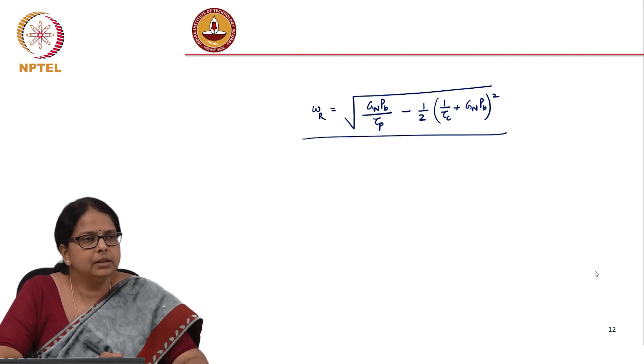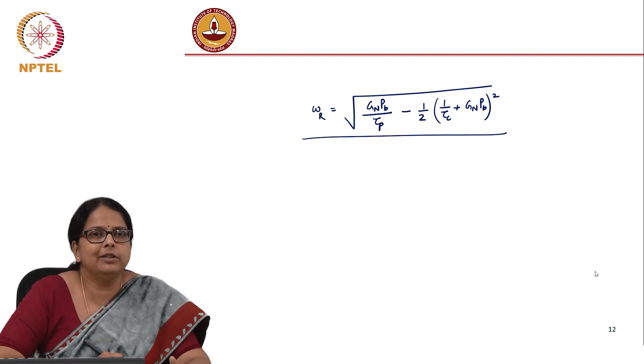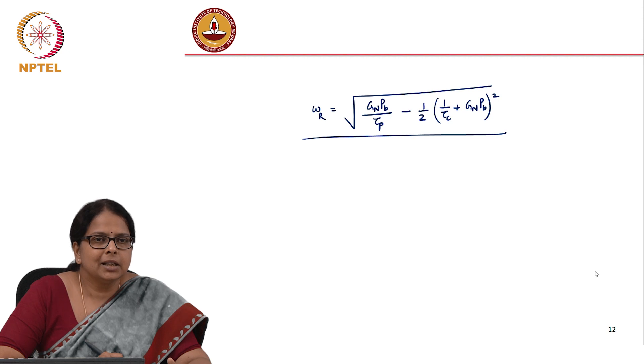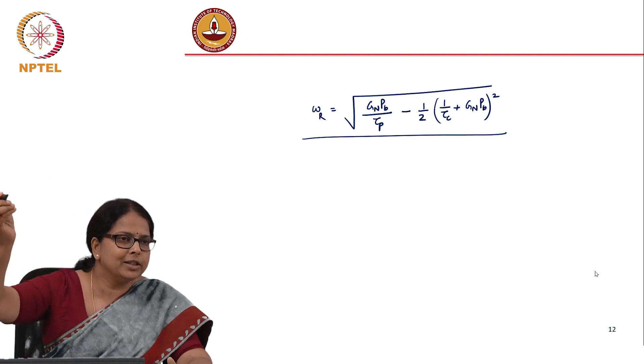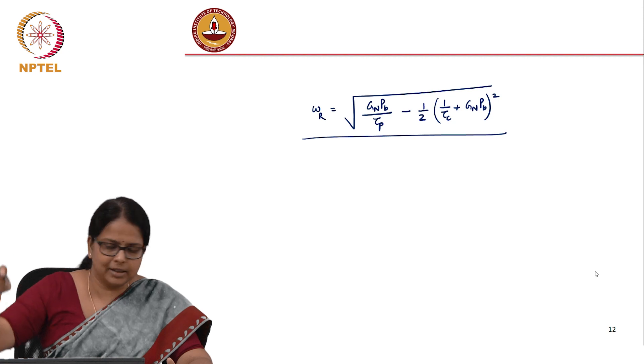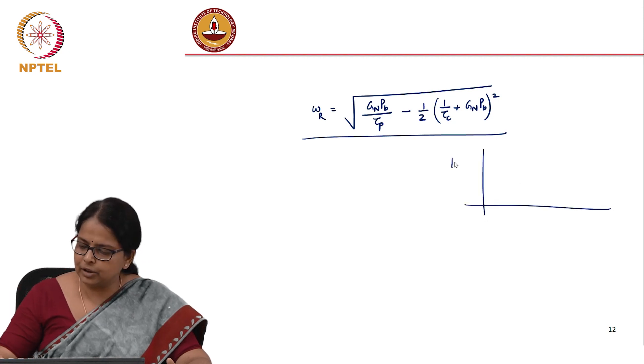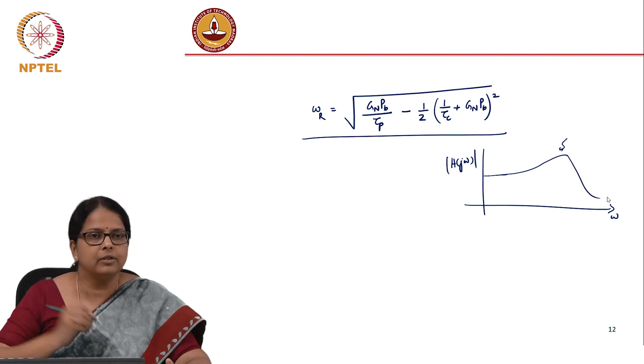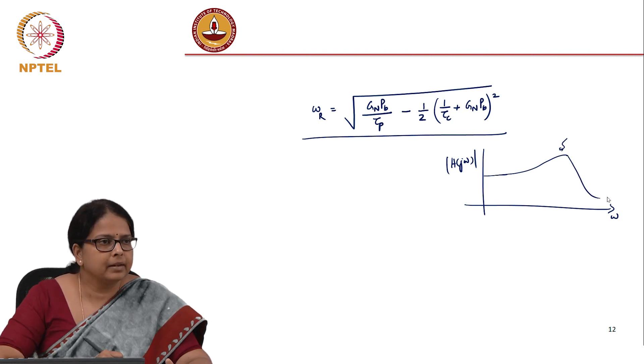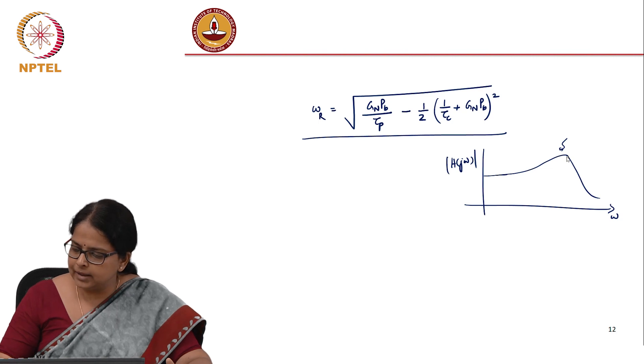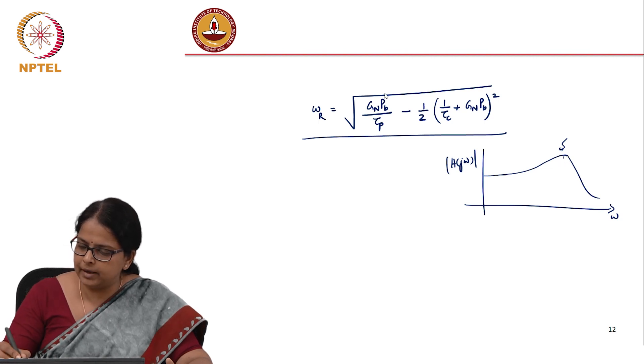What does this mean? The system has a resonant frequency, meaning it has certain maximum response at that frequency. If you plot h(j*omega), there will be some response at lower frequency, there is a frequency at which it is maximum and then it falls.